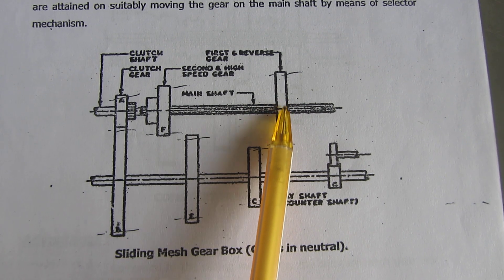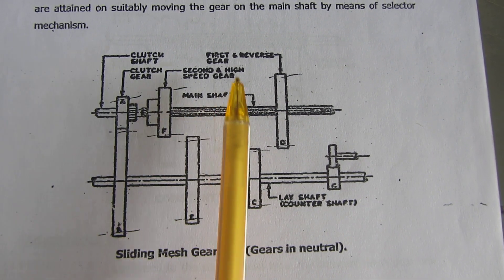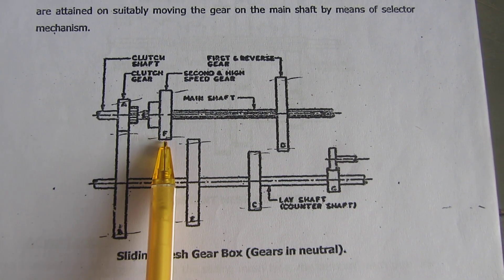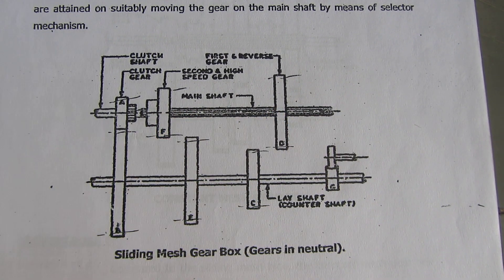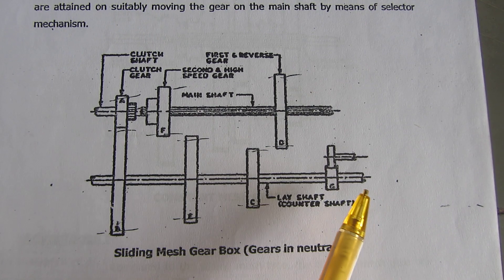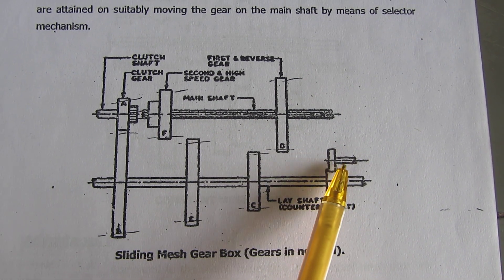The main shaft has external splines, and these gears have internal splines. When the layshaft gear engages with the main shaft gear, due to the splines, the main shaft gear starts rotating. This is a reverse gear which gives opposite motion to the main shaft as compared to the clutch shaft.